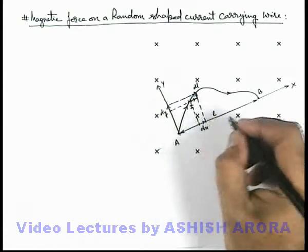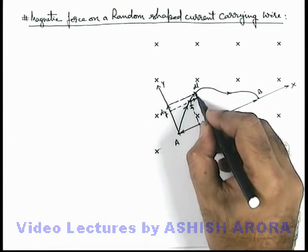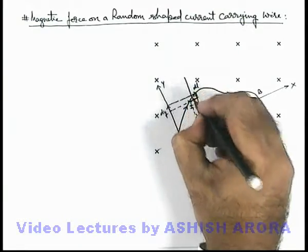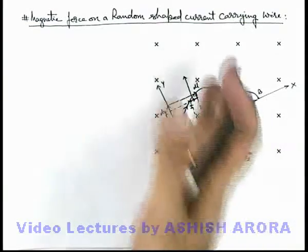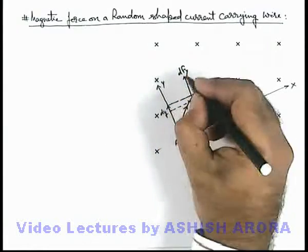Now in this situation, if we talk about the net magnetic force acting on this element of length dx, it will be in upward direction, that is along y direction. By right hand palm rule we can see this is dF in y direction.